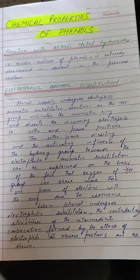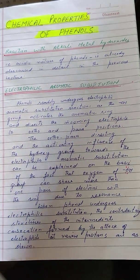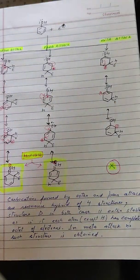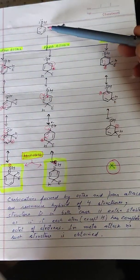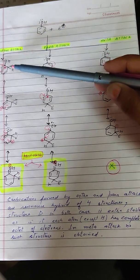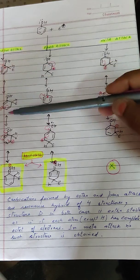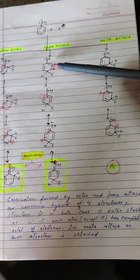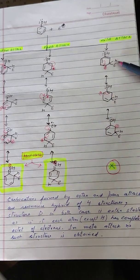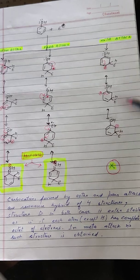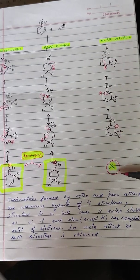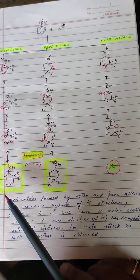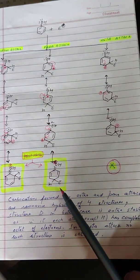When phenol undergoes electrophilic substitution, the contributing structures of the intermediate carbocation formed by the attack of the electrophile at various positions are as shown on the next page. For ortho attack we get four contributing structures A, B, C, D; for para attack again four structures A, B, C, D; but for meta attack we get only three contributing structures A, B, C — no structure corresponding to D.